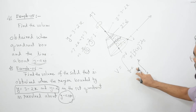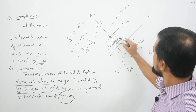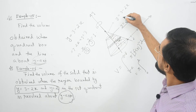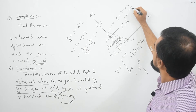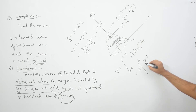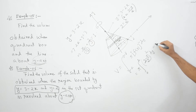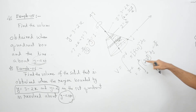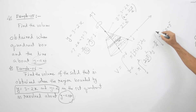So from 0 to 2, π times [f(y)]² dy, where f(y) equals x, which is the radius. From the equation y equal to 3 minus 2x, we get x equal to (3 minus y) divided by 2. So the radius is (3-y)/2, and we integrate π times [(3-y)/2]² dy. This gives π/4 times the integral of (3-y)² expanded as 9 minus 6y plus y² from 0 to 2.